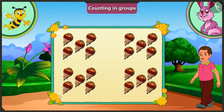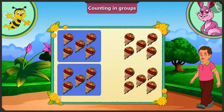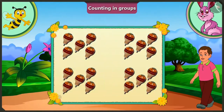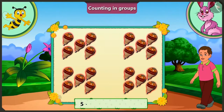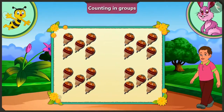Bunny, can you guess and tell me how many tops are there? There are 2, 8, 2 — 4 groups. That means there are 4 tops in total. No, there are groups of 5 tops each. That means there are 20 tops in total.